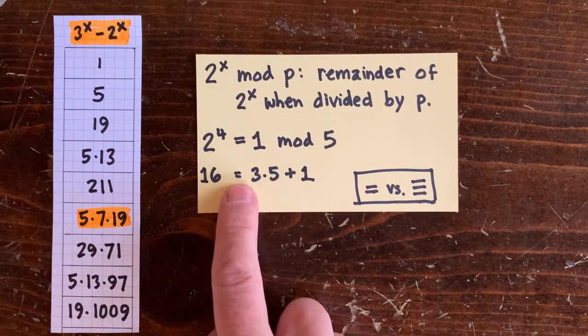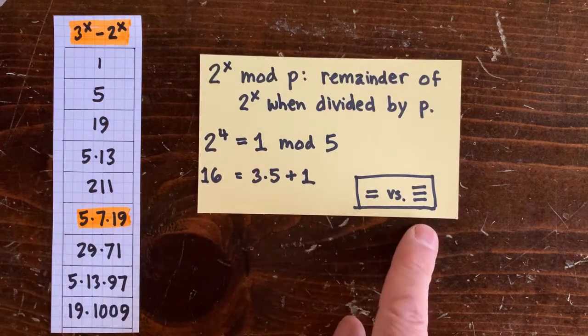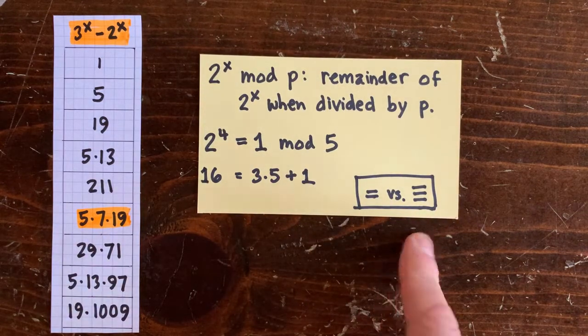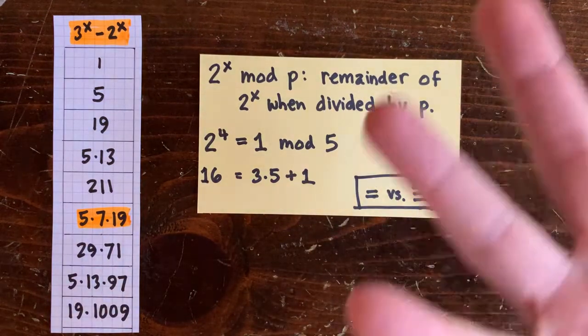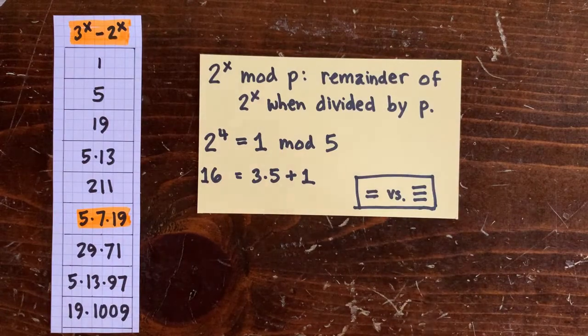I'm supposed to write three lines here instead of two for congruence, but I'm not going to do that. This distinction is super important in certain contexts, which this is not one of those.